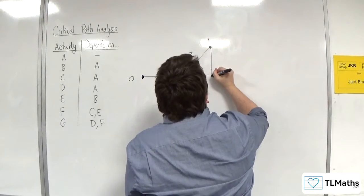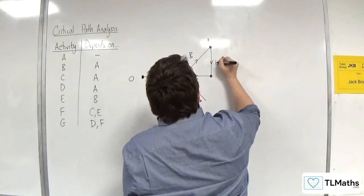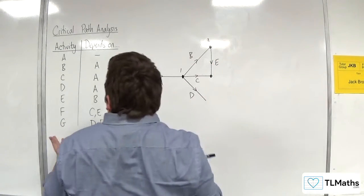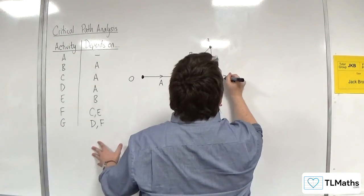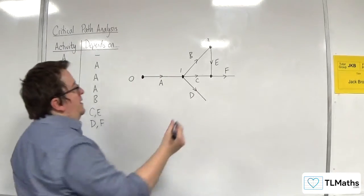So it just comes vertically downwards, and then I can have F coming out there. Let's label that number 3.